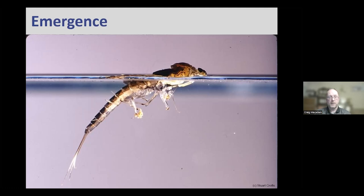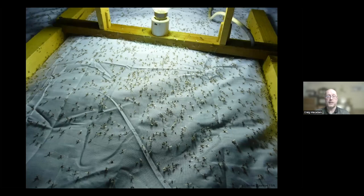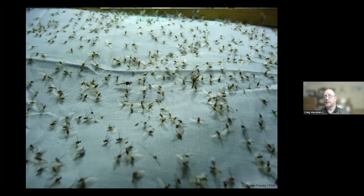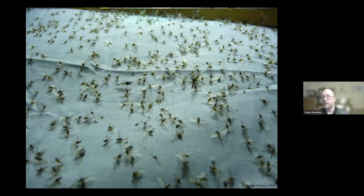Some emergences happen in huge numbers. A moth trap put out at the side of Windermere caught what looked like smoke coming across the lake — it was actually hundreds of mayflies and a few Chironomid midges. This species, Caenis, lives in silt and sand in the lake and emerges en masse at night, attracted to lights. About a quarter of UK species are attracted to light, so light trapping can be a good method to find some of these species.